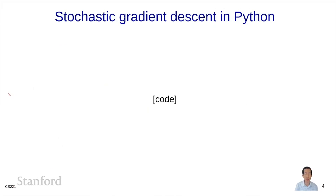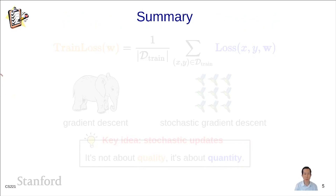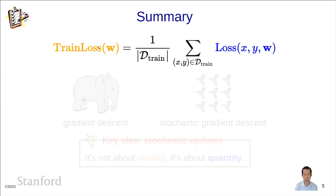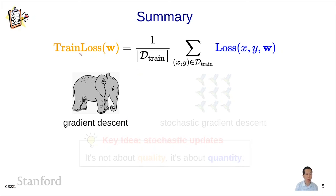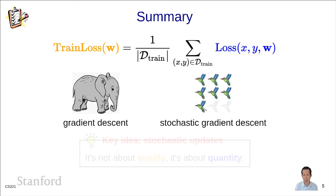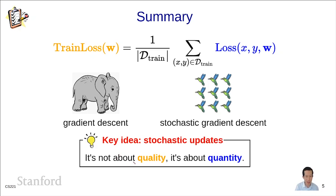To summarize: we want to optimize the training loss, which is an average over per-example losses. Gradient descent takes a step on the gradient of the full training loss, while stochastic gradient descent picks individual examples and updates after computing the gradient of each. On this example, stochastic gradient descent wins. The key idea behind stochastic updates is that it's not about quality, it's about quantity — it's wiser to keep optimizing the objective rather than spending all effort on a single high-quality gradient. That concludes the module on stochastic gradient descent.